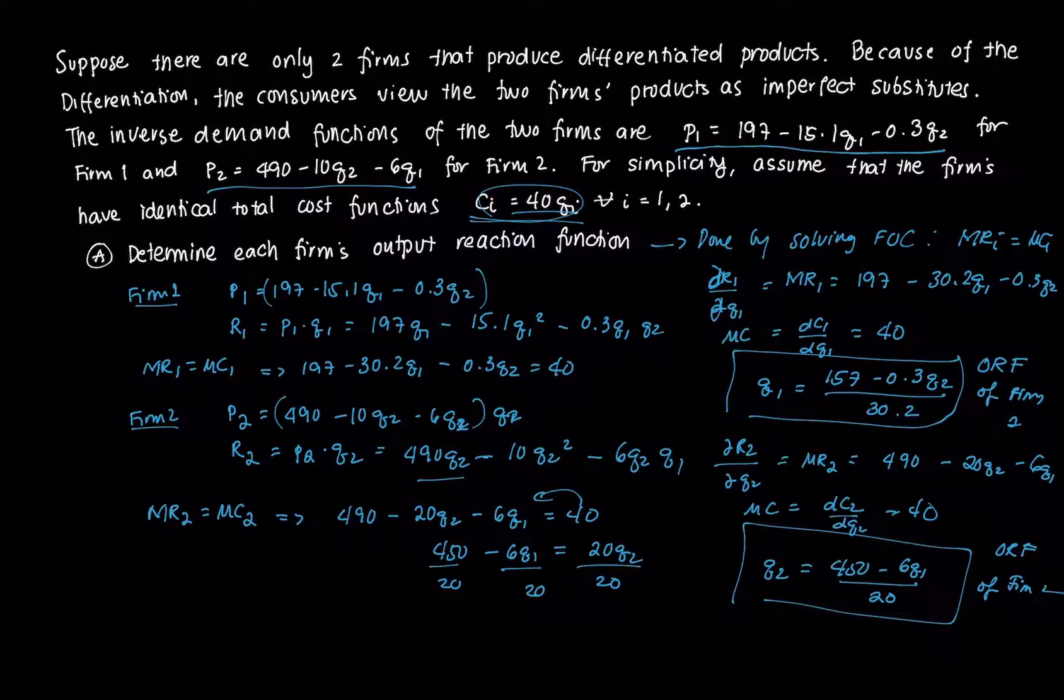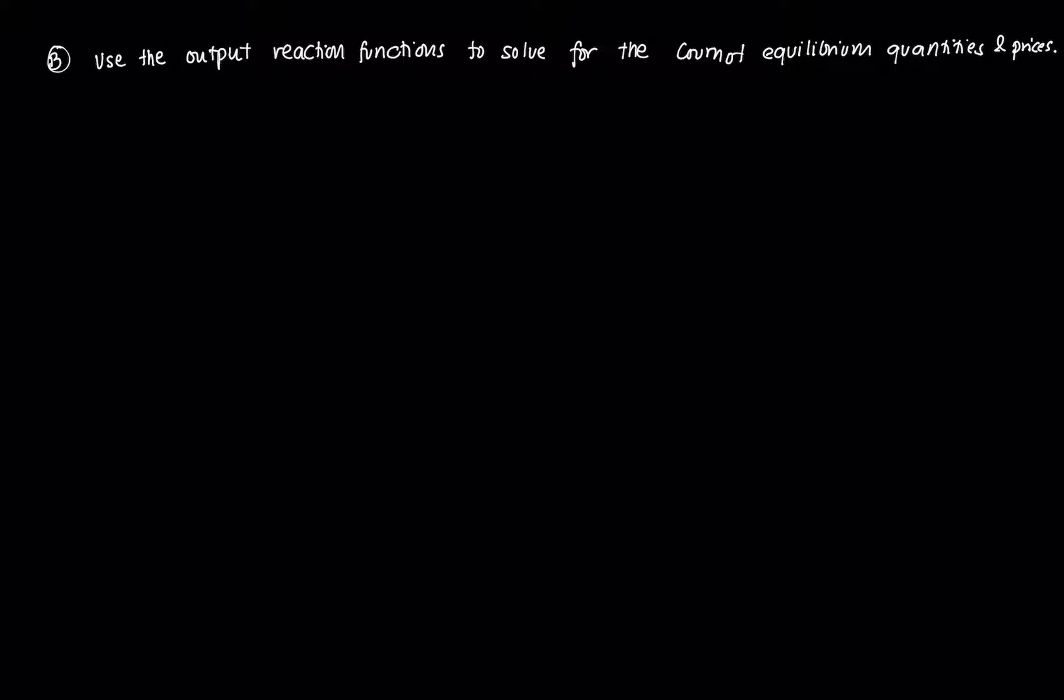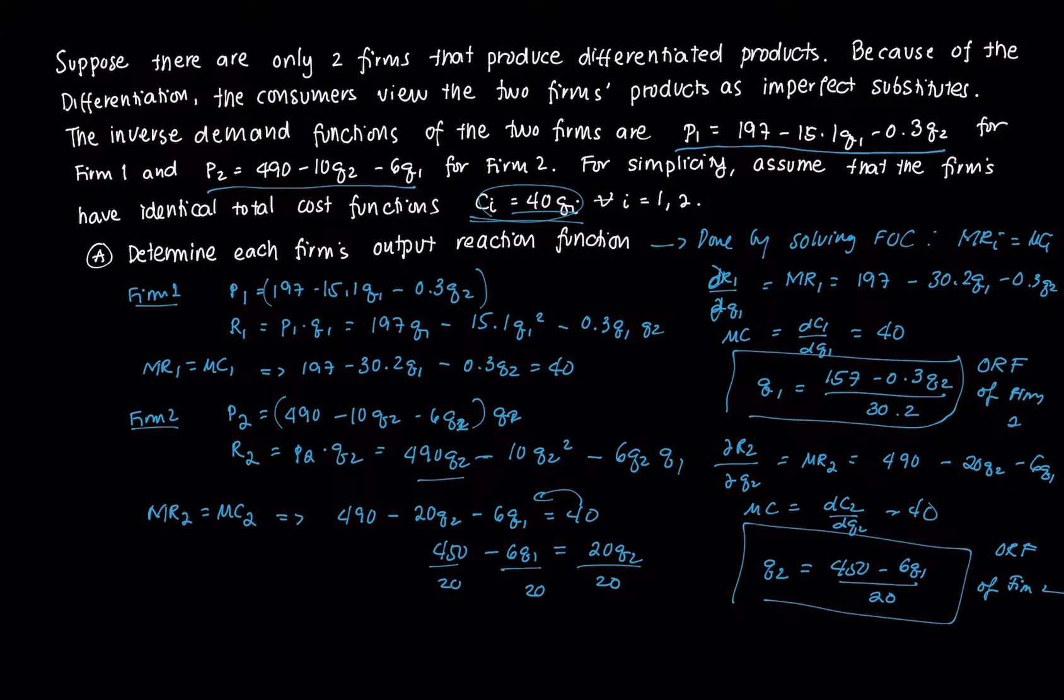Now we're going to use these output reaction functions to solve for the Cournot equilibrium prices and quantities. The Cournot equilibrium quantities are obtained by simultaneously solving the ORFs of firms 1 and 2.